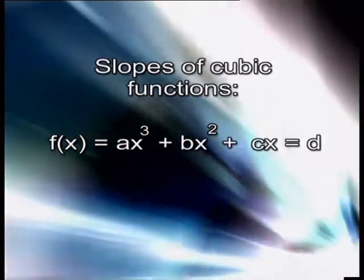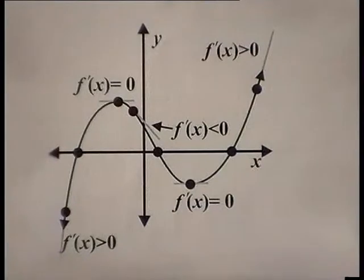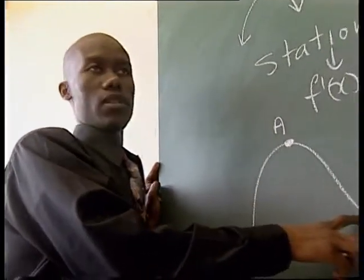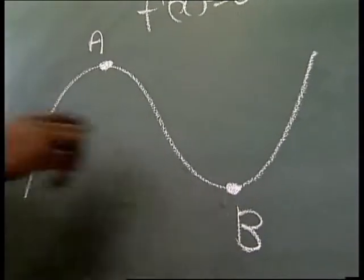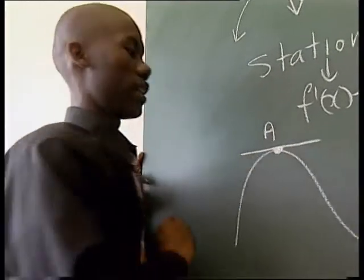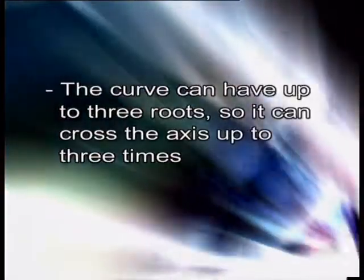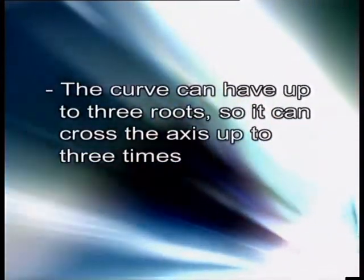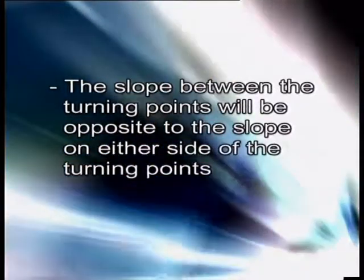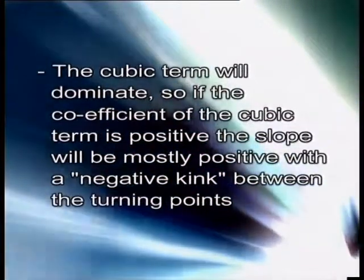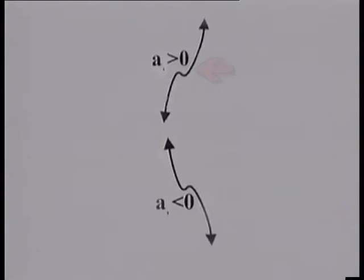The slope of a cubic function can be found by differentiating in exactly the same way. The derivative function is quadratic and changes direction twice. There are two roots and two points where the slope equals zero — in other words, two turning points. At point A we have a maximum turning point, at point B a minimum turning point, and the slope at both is zero. Key features of cubic functions: the curve can have up to three roots and up to two turning points. If the coefficient of the cubic term is positive, the slope will be mostly positive with a negative kink between the turning points; if negative, the curve will be mostly negative with a positive kink.